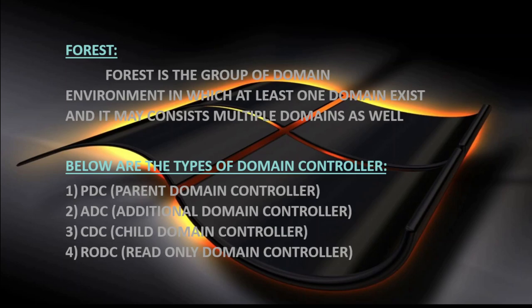Now we will discuss the types of domain controllers in the forest — how many types can be in a forest. Below are the different types: one, the PDC — Parent Domain Controller; ADC — Additional Domain Controller; CDC — Child Domain Controller; and RODC — Read Only Domain Controller. These four types of domain controllers can be in a forest, and we will discuss each one by one.